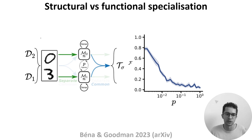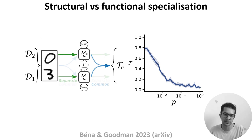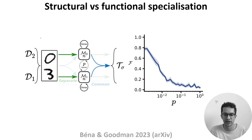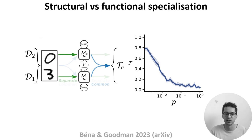One of their main results shows that when p is low — so intermodule connectivity is sparse — functional specialization is high, but as p increases, specialization decreases very rapidly. This suggests that only networks with extremely sparse intermodule connections become functionally specialized. Together with other evidence, this paper adds to a growing picture that function in the brain may be less localized than previously thought.